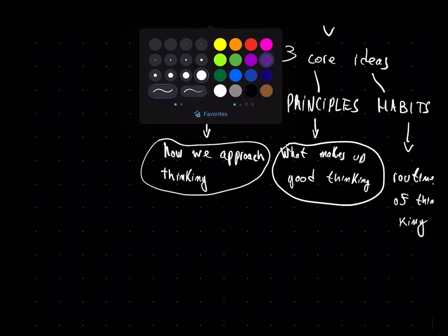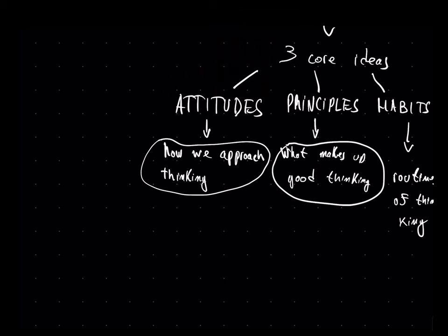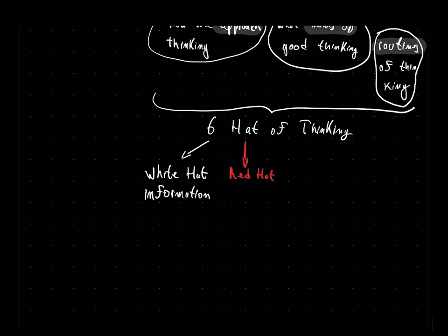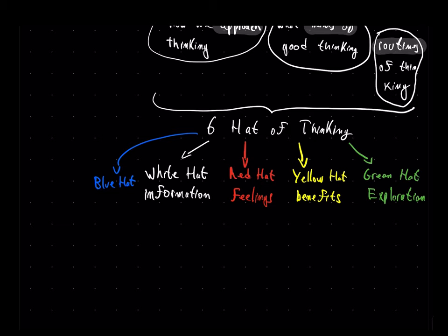The author brings these ideas together into what he calls the six hats of thinking. The white hat is about gathering information. The red hat, which is about how we feel about situations and things. The yellow hat is about considering the benefits regarding a situation we're thinking about. The green hat is about exploration of ideas, suggestions, and alternatives.